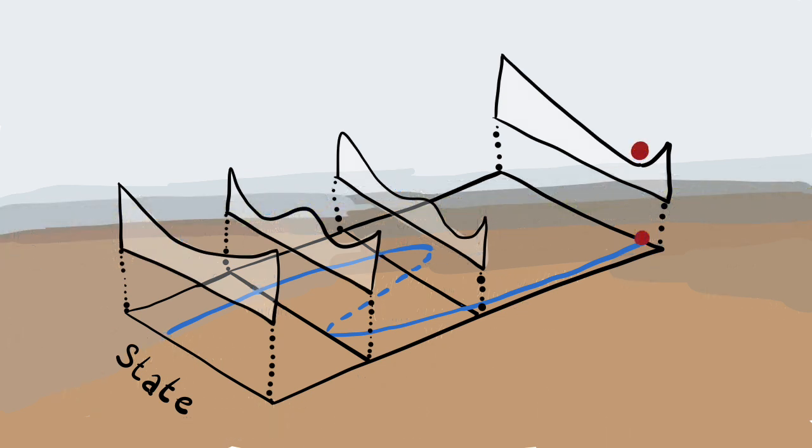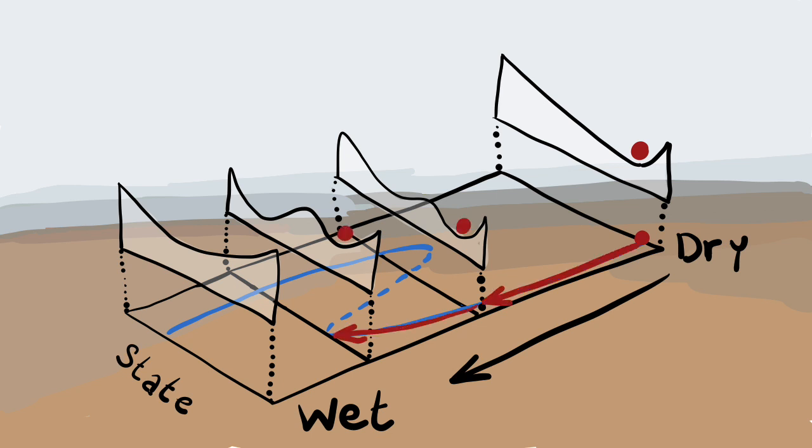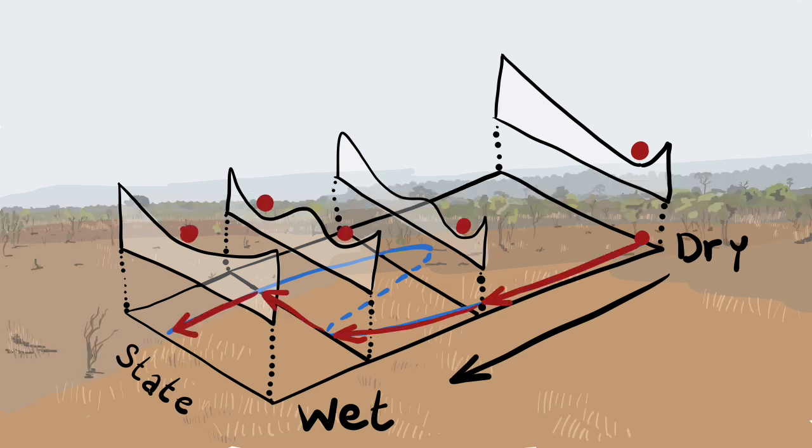In order to restore the state with vegetation, the environment now needs to become much wetter than it was right before the shift occurred.